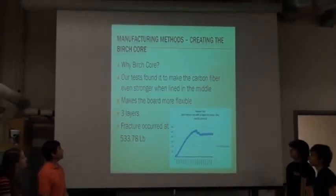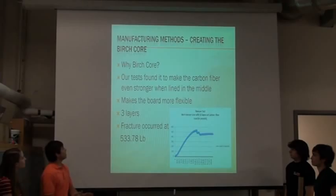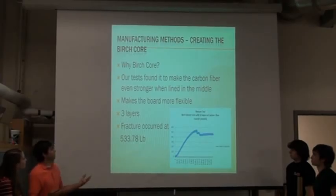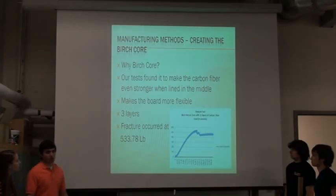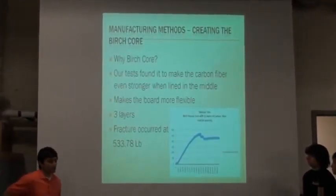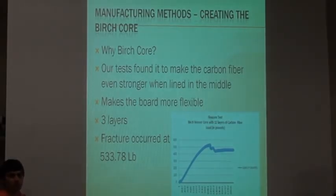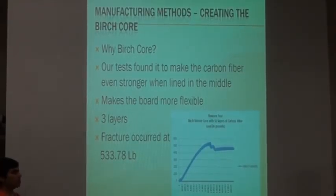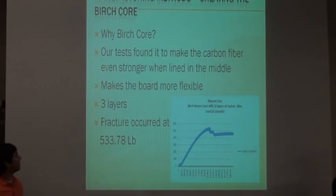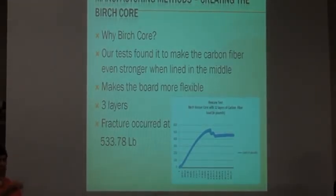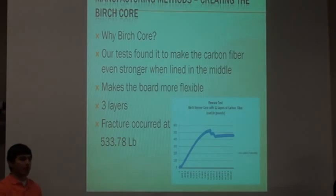So, as we said earlier, we chose the birch core in the middle. So we found it to, you know, when lined in the middle of the carbon fiber, it made the board overall more flexible. And we chose that over plywood just because it was much thinner. And so when we actually cut it out, we used three small layers of the material that we had. We laid it out.